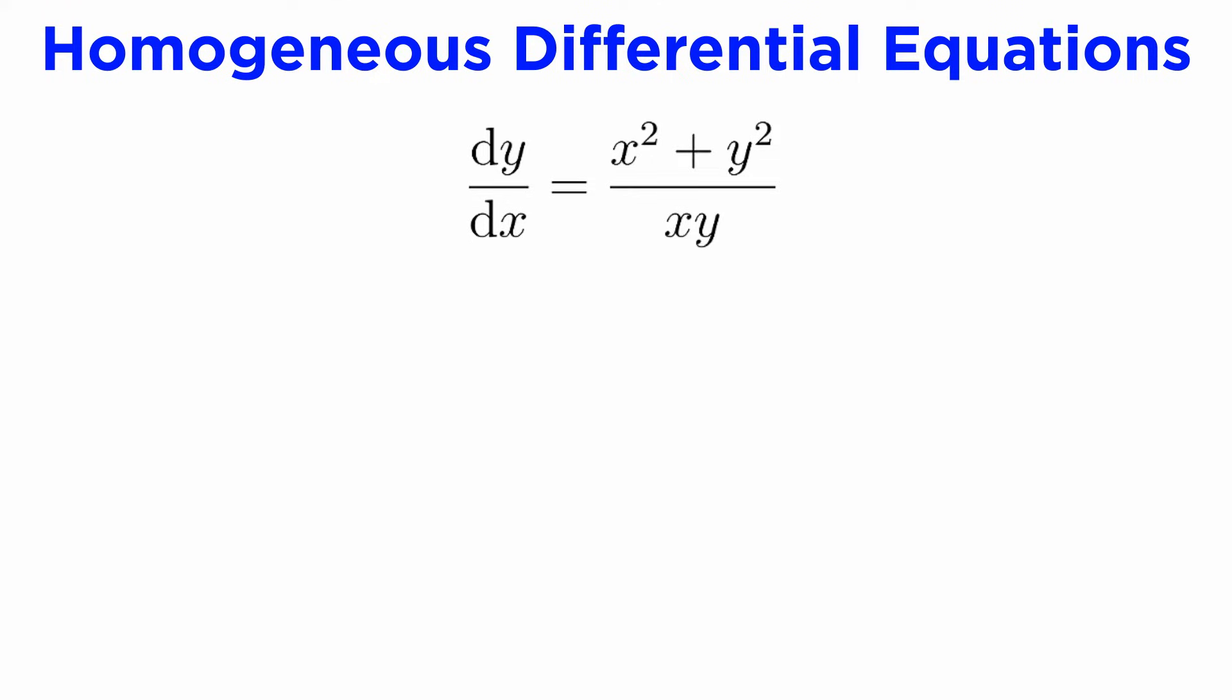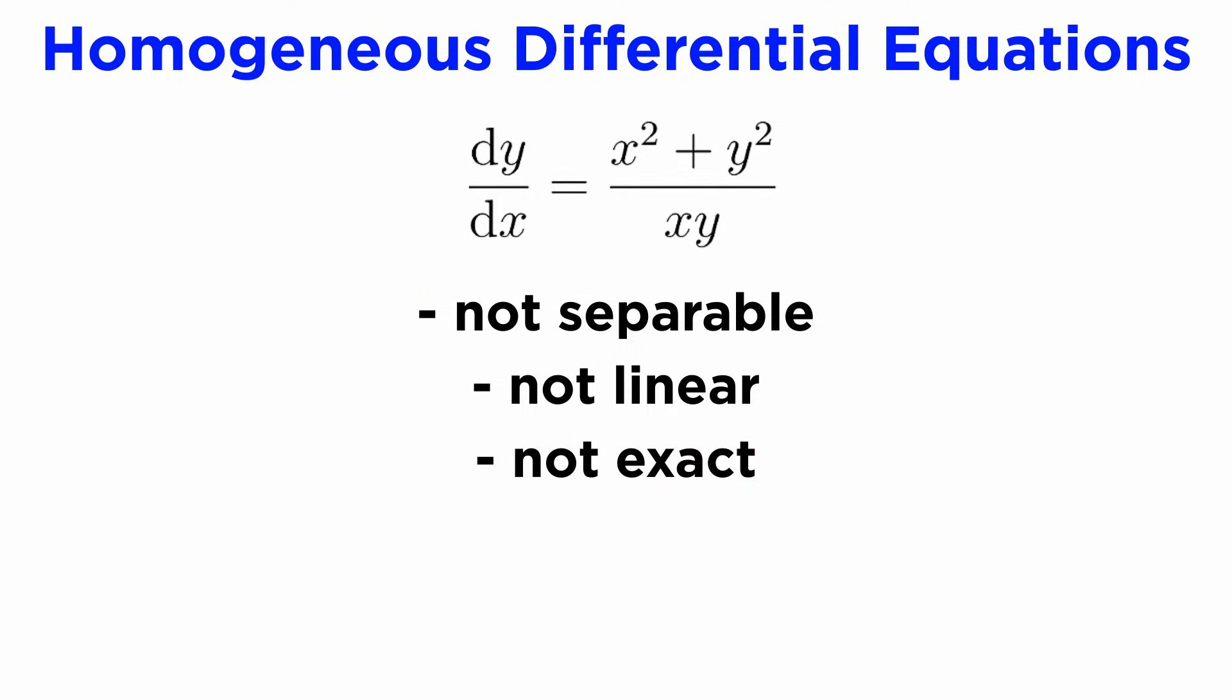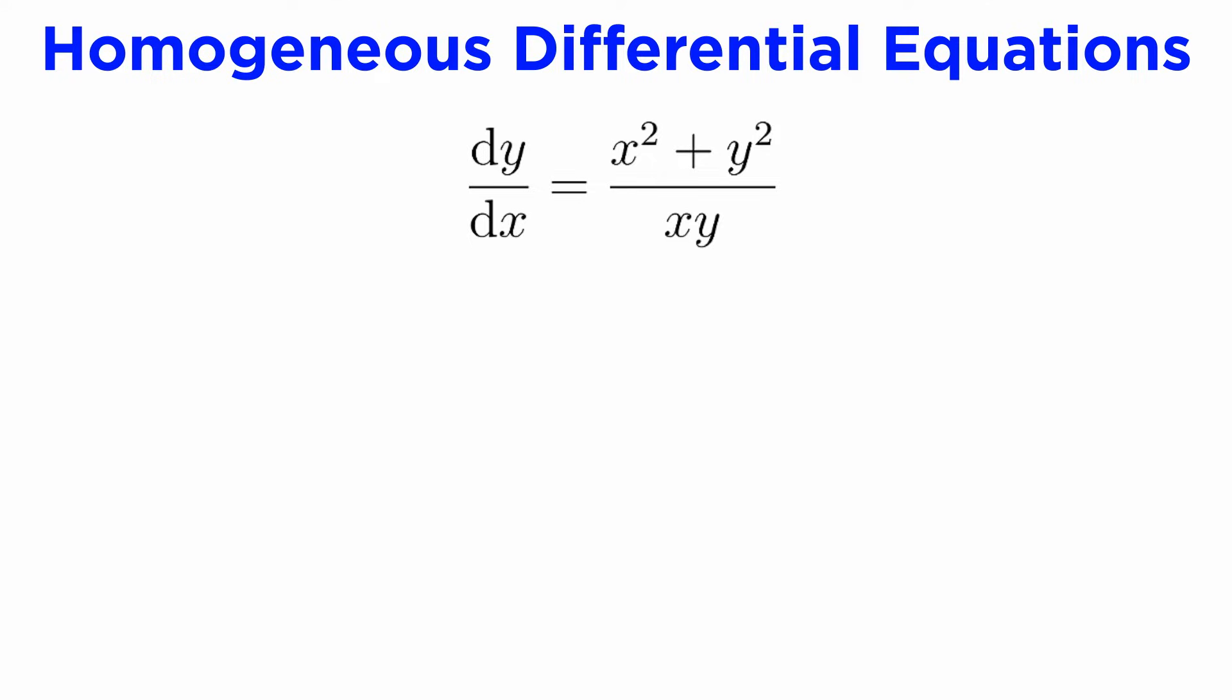Here's an example. Let's solve the differential equation dy/dx equals x squared plus y squared all over x times y. This might look simple, but it's actually not separable, nor linear, nor exact, so we need to try something else. This is of course a homogeneous differential equation in disguise, and we now know two ways to show it.